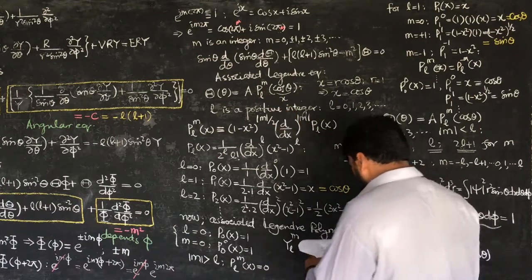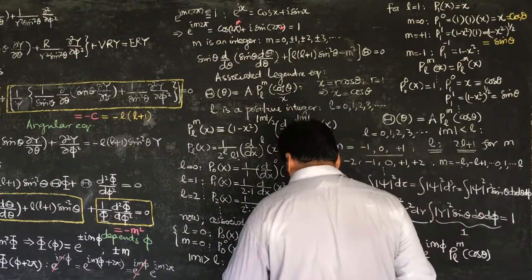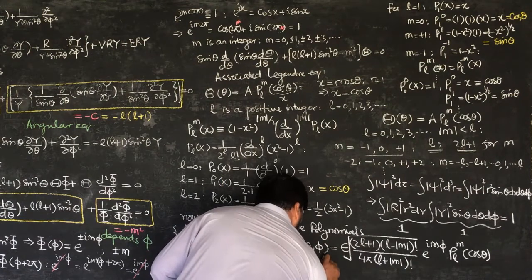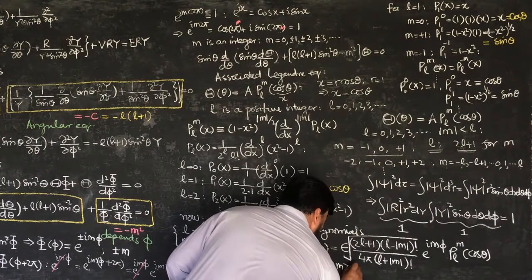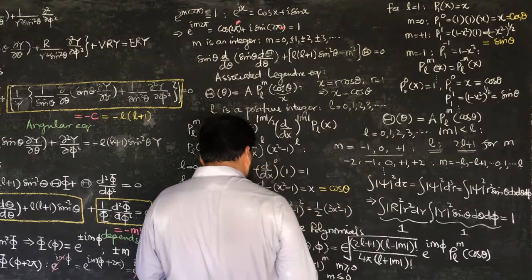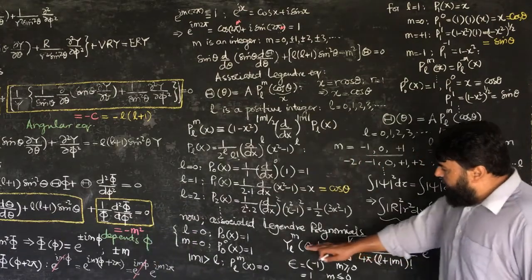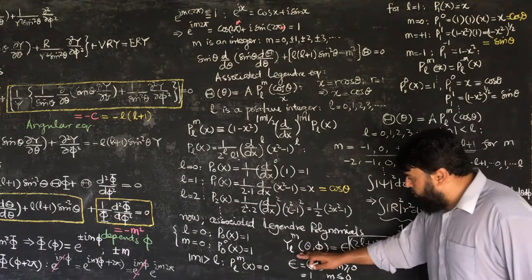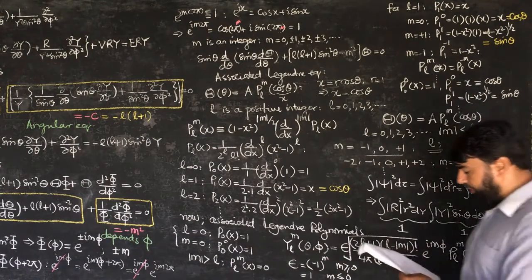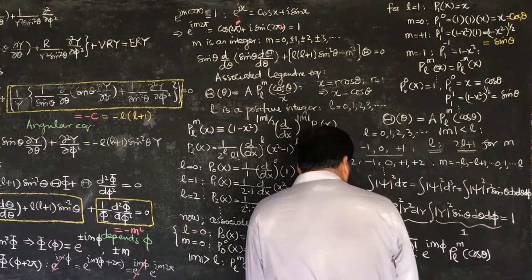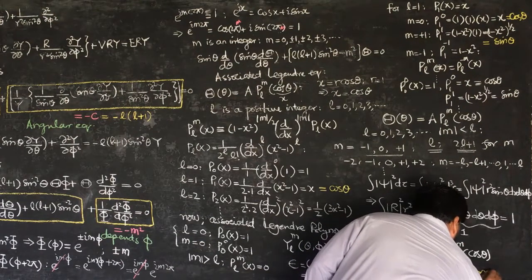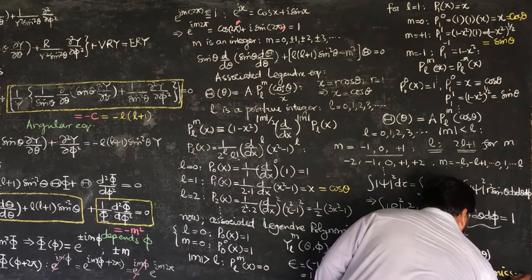Here ε is a phase constant equal to (-1)^m when m is positive and 1 when m is negative. These are the normalized angular wave functions, and we call them the spherical harmonics Y_l^m. These spherical harmonics will be discussed further in the coming lectures.